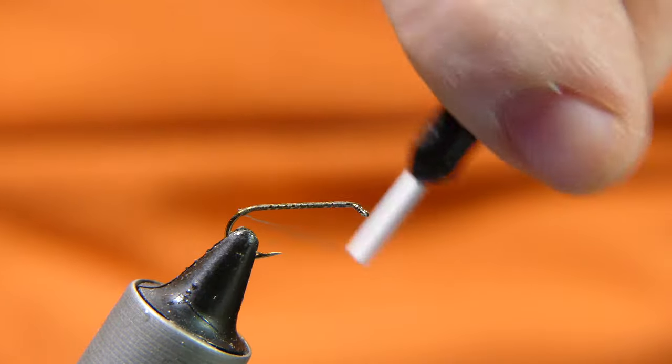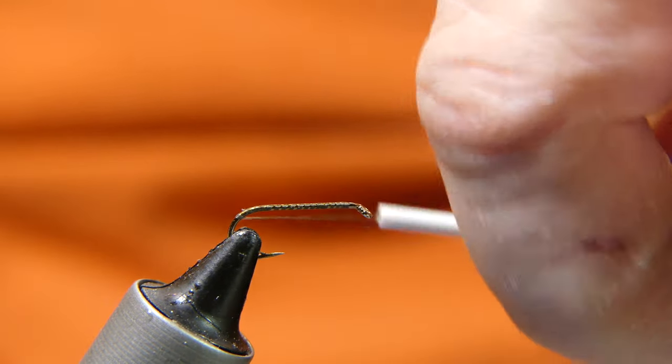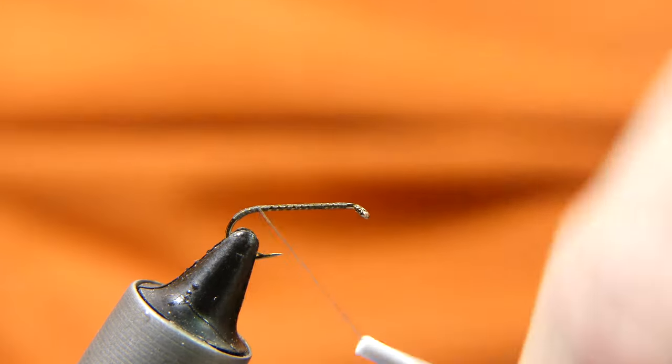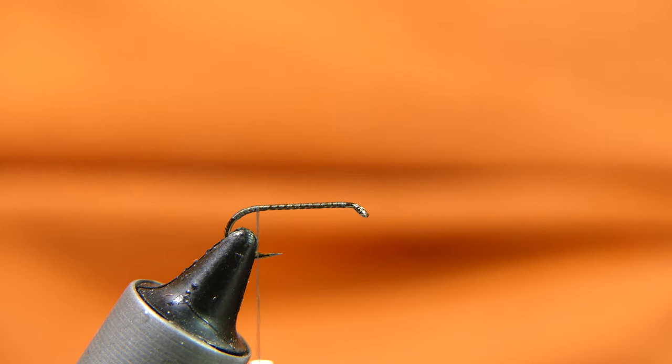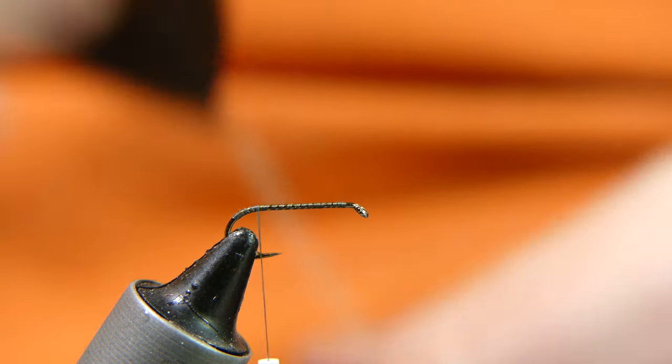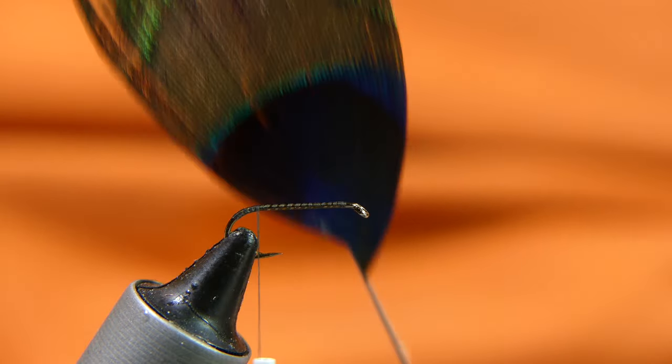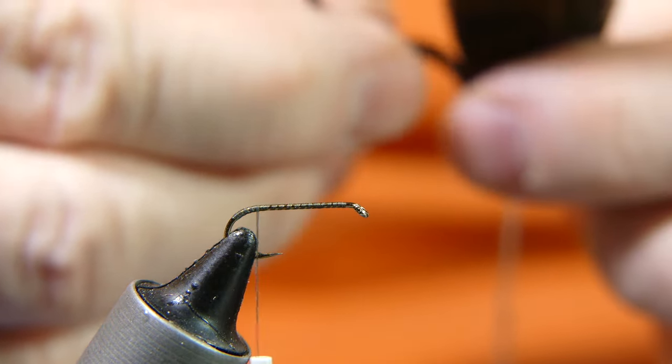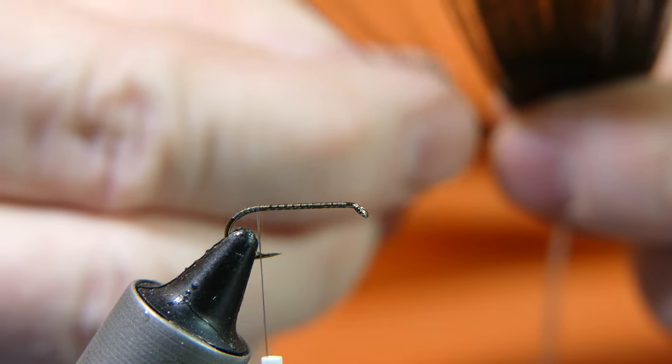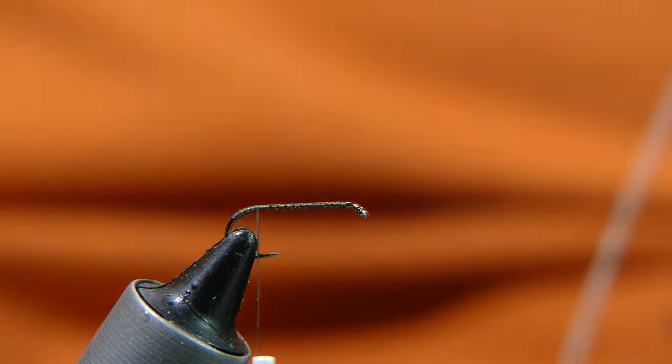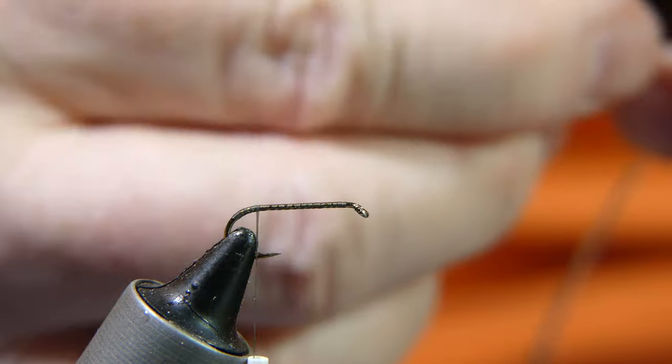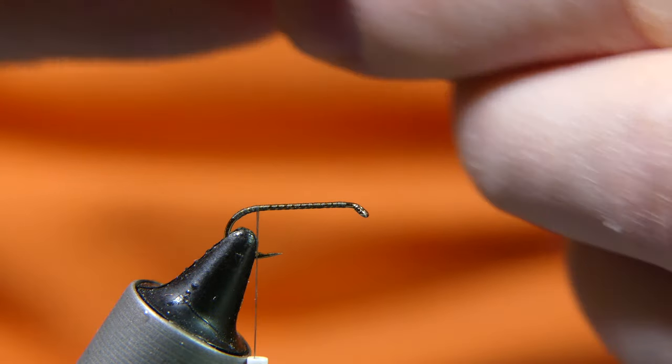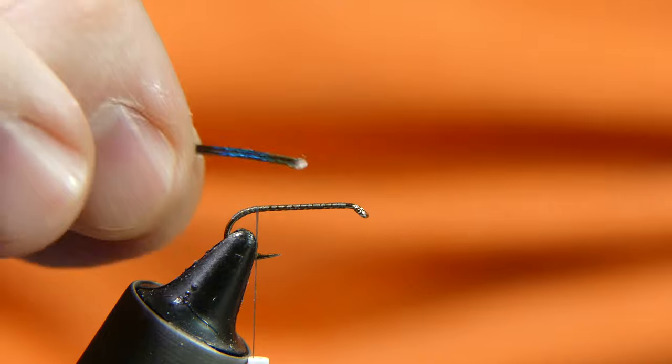Start with your thread behind the eye, wrap it backwards, take off the tag end. Bring your thread all the way around to the top of the bend of the hook, bring it back up a few wraps. Now we're going to tie in some of this peacock herl. I'm going to use the eye area, take two strands.